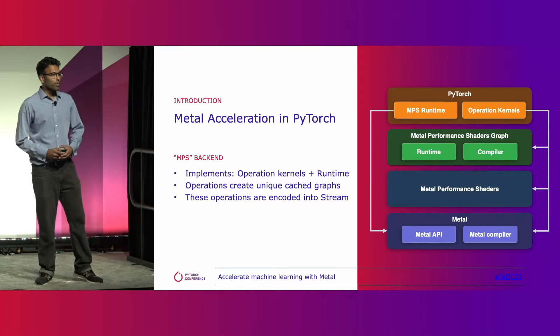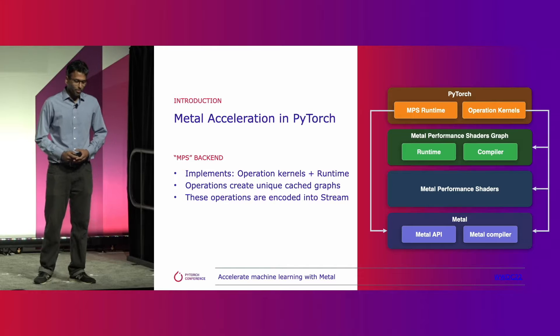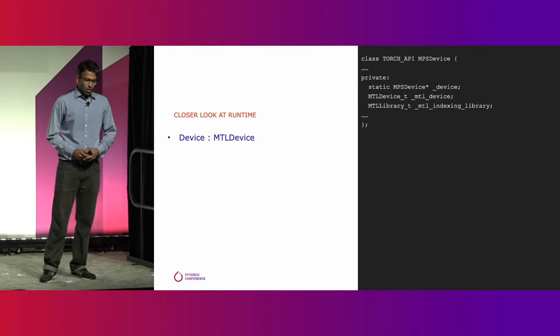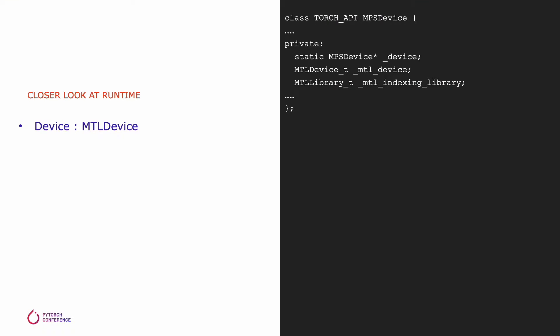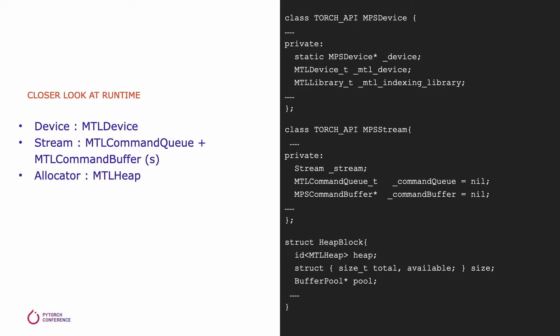For more details, you can refer to our WWDC talk from earlier this year on acceleration ML with Metal. Now, let's take a closer look at some of the runtime components in the MPS backend. We have a simple device class which does discovery of available Metal devices and selects the best GPU device for you. Then we have a stream abstraction, which implements Metal's command queue and the last active command buffer used to encode all work onto. We also have our allocator, which uses Metal heaps, automatic hazard tracking, and similar heuristics used by other GPU backends.